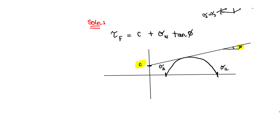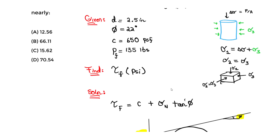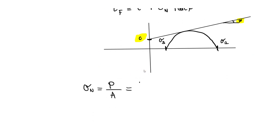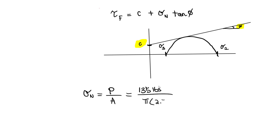We have c and phi from the given values, but we need sigma_n. Sigma_n equals the load over the area — stress is always load over area. The load at failure is 135 pounds, and the area is pi * d^2 / 4 = pi * (2.5)^2 / 4. Solving this gives sigma_n approximately equal to 27.50 PSI.